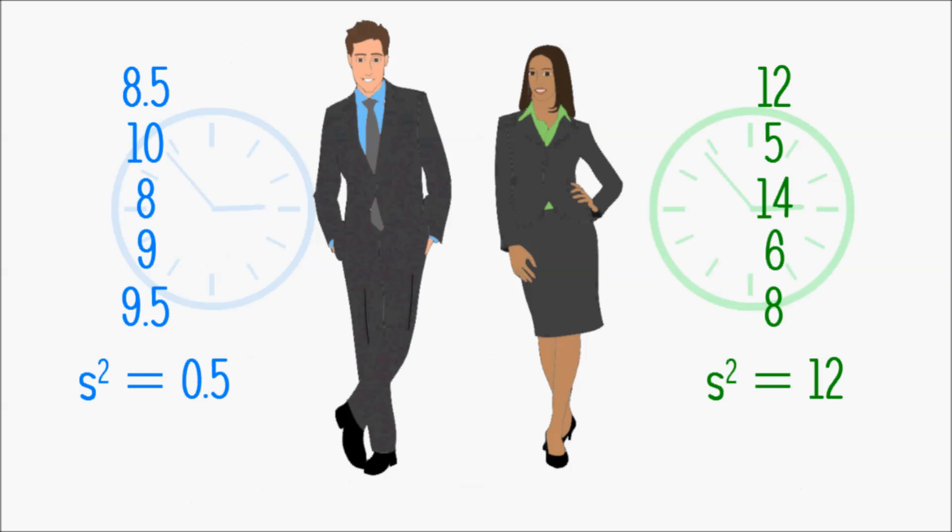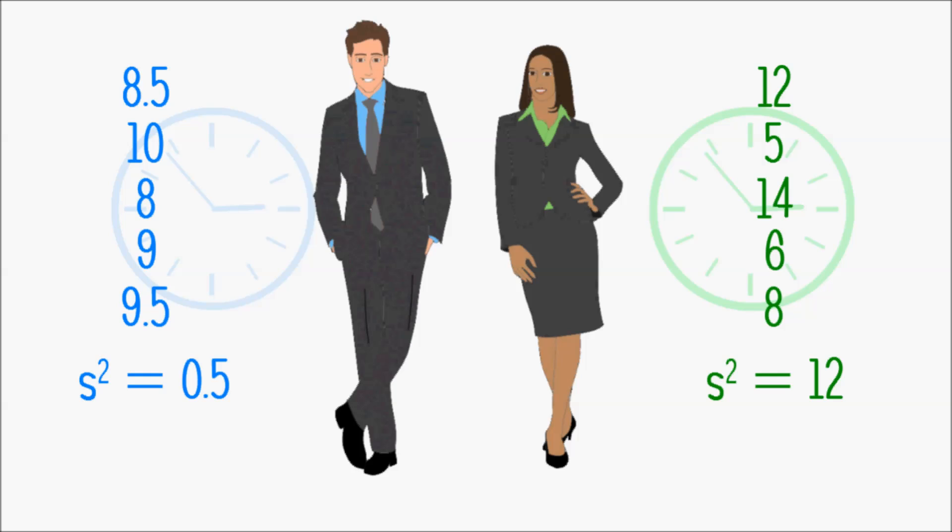The standard deviation for Patrick's working hours is the square root of 0.5, which is approximately 0.7, and for Anna's working hours it is the square root of 12, which is approximately 3.5.